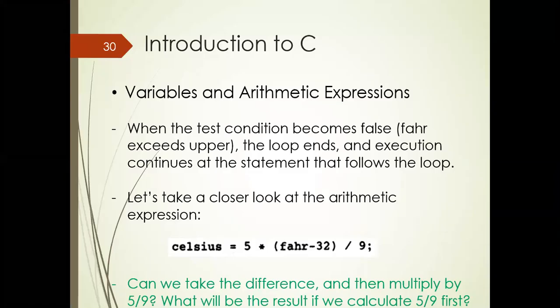Yes, students, we continue where we left off last time. I asked you to complete both modifications to your program, which was converting Fahrenheit to Celsius. You first calculate the formula by multiplying by five over nine separately, in parentheses, and see what output you get. I'm going to quickly shift to Dev C++ to show you the outcome.